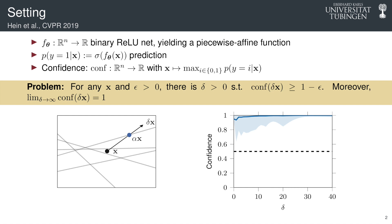And suppose we have any point X, and if we scale it with some scalar δ, at some point it will go to outer linear region that extends to infinity. And at this point onwards, we are basically working with just a single affine function. And because of that, we can show that the confidence in this case will converge to one when δ goes to infinity.